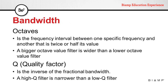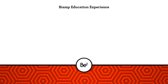Bandwidth can be specified in octaves, which is a frequency interval between one specific frequency and another that is twice or half its value. A bigger octave value filter is wider than a lower octave value filter. Bandwidth can also be specified in Q, or quality factor. This is the inverse of the fractional bandwidth, calculated by dividing the center frequency of the filter by the frequency bandwidth. A high Q filter is going to be narrower than a low Q filter.